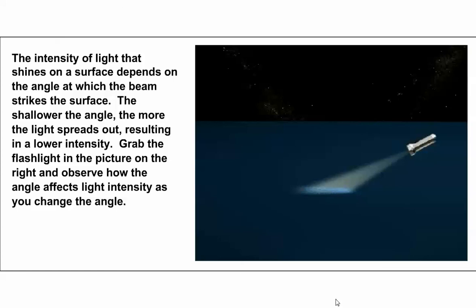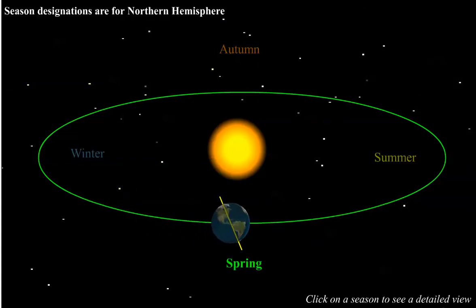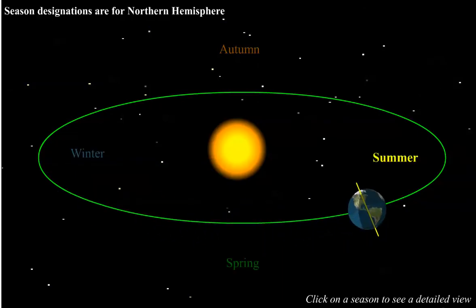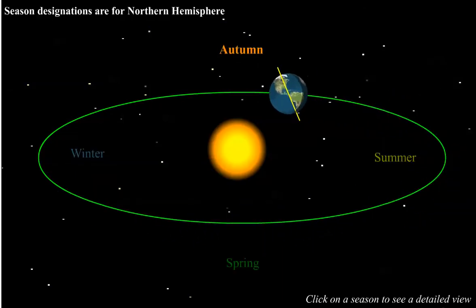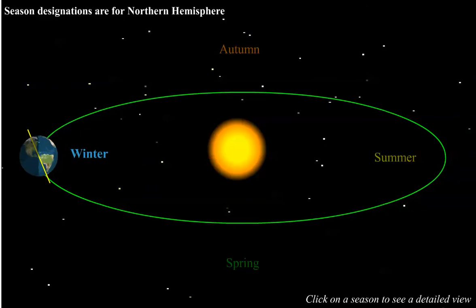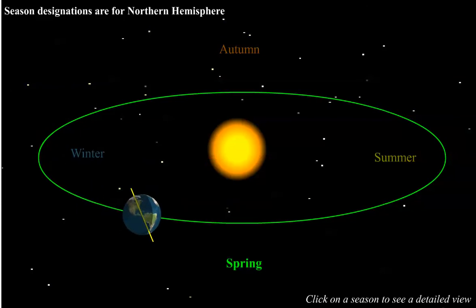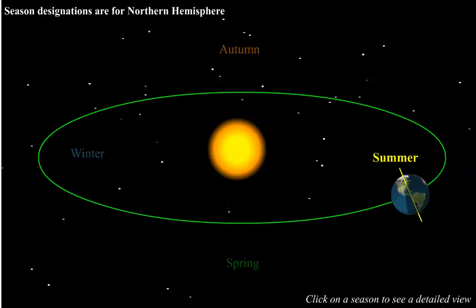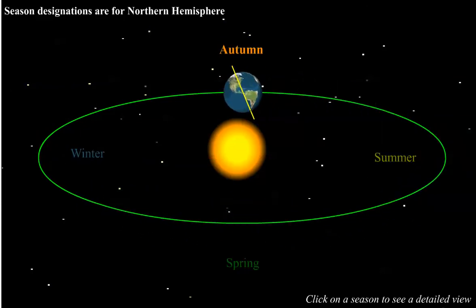To better see how the changing sun angle impacts the seasons, we have an animation here of the earth revolving around the sun, with the earth tilted on its axis at the 23.5 degree angle. The seasonal designations here are for the northern hemisphere.